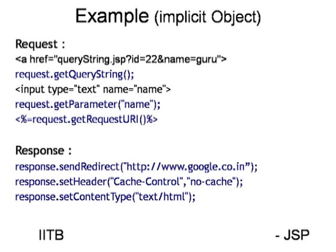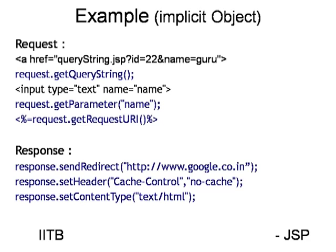Let me show some examples. For the request object: when a client passes parameters to another page, that data is the request parameter. Using an anchor tag I have referenced a JSP file with parameters and values. When you click that link, the data is passed along. We can retrieve those parameters as a query string using 'request.getQueryString()'.